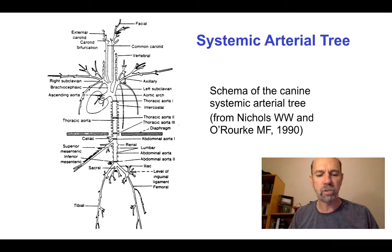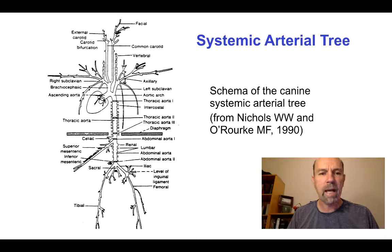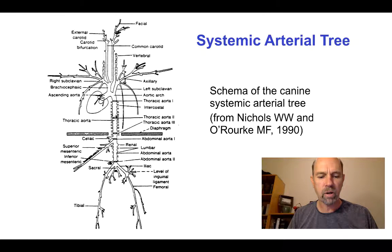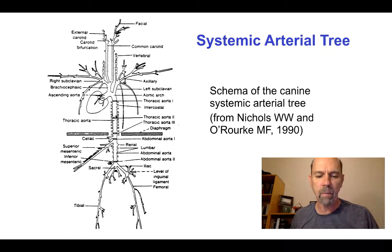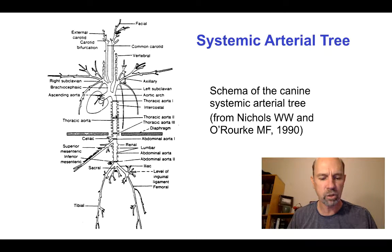Here we see the tree structure of the systemic arterial system in a dog. As we proceed along the arterial tree, the diameter of the aorta decreases, but this is due less to a gradual taper than to a reduction in diameter after each branch point in the tree.